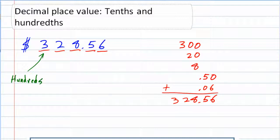And the 2 right beside of it, that told me how many tens I have. So that place value is tens. The 8 told me how many ones.